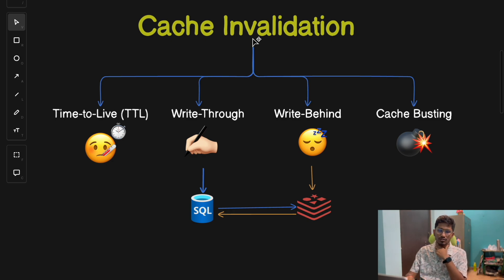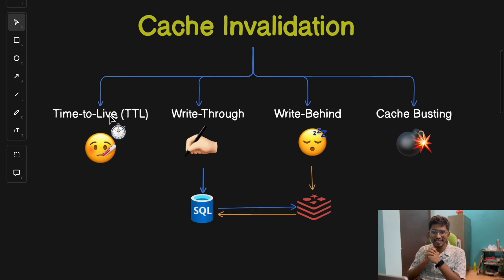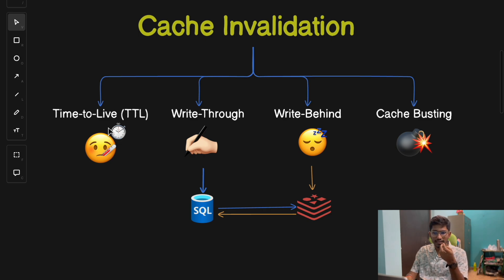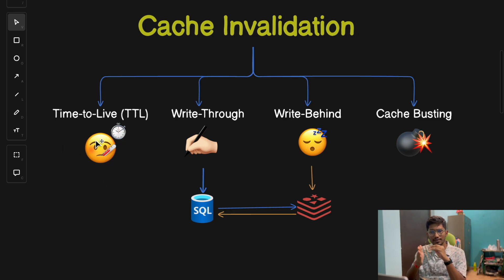There are some strategies to implement cache invalidation. The first is Time To Live, or TTL. With TTL, cache data is set to expire after a certain period. Once it expires, the cache fetches fresh data from the main source. This is a simple yet effective approach for many use cases — after a certain period of time, the data from the cache is removed or cleaned.